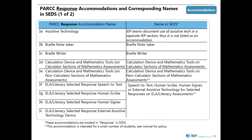Now we move into response accommodations. The ELA response accommodations for PARCC can be provided in four different modalities: speech-to-text, human scribe, human signer, or external assistive technology device. In SEDS, these four modalities are all lumped together. However, on the PNP, the user should select which of the four options is most appropriate for the student.